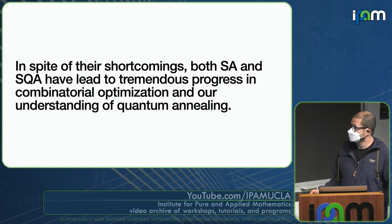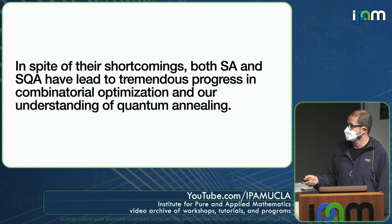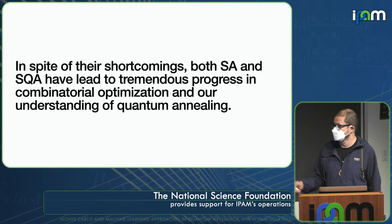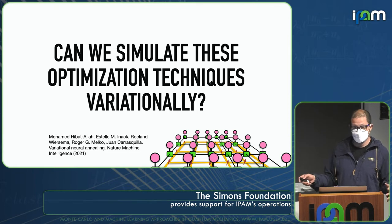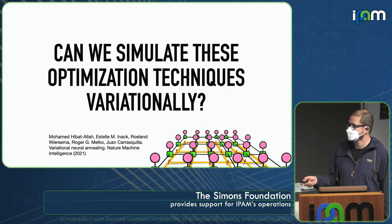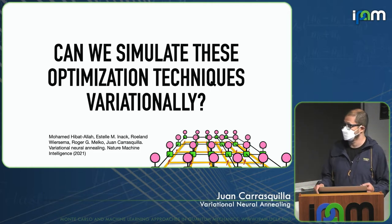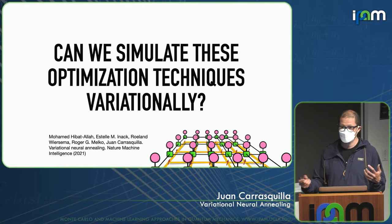In spite of shortcomings like slow Markov chain dynamics, both simulated annealing and simulated quantum annealing have led to tremendous progress in combinatorial optimization. But the question I'm asking is: can we simulate these techniques variationally? And that's what I call variational neural annealing, because I'm going to use neural networks.